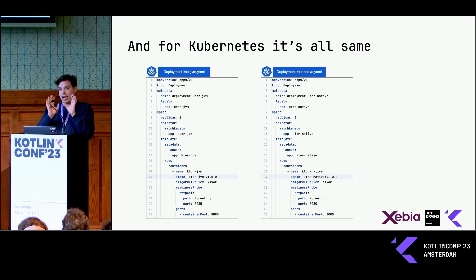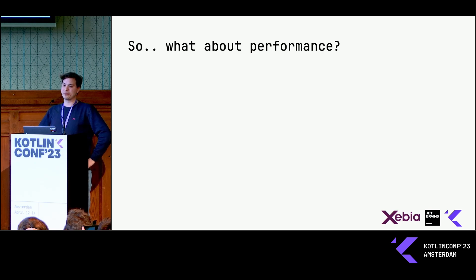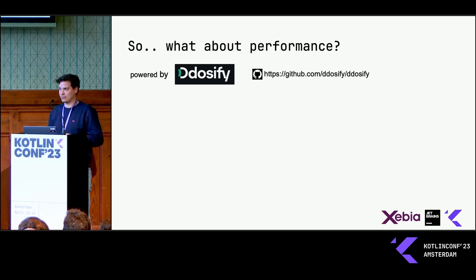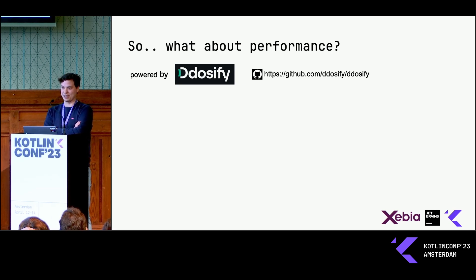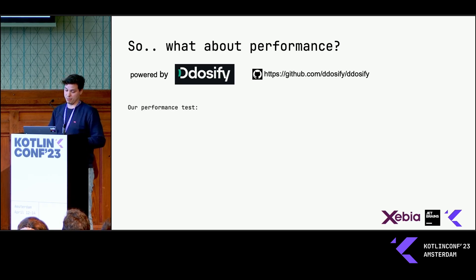From the outside, it will functionally do the same thing. So then we're wondering: what about performance? How does this relate to each other? For that, I set up a small performance test with a very nice CLI tool called DDOSify — kind of a scary name, but it's actually just a very simple tool that allows you to do a lot of requests in a certain fashion. Pretty versatile tool, written in Go. I would recommend it.